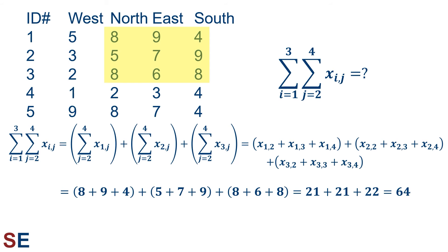So our first summation in the parentheses becomes x 1 comma 2, plus x 1 comma 3, plus x 1 comma 4. The second set of summations is x 2 comma 2, plus x 2 comma 3, plus x 2 comma 4. And then the third set will be x 3 comma 2, plus x 3 comma 3, plus x 3 comma 4.